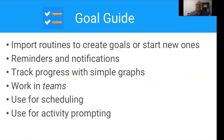So that's Routines — it's a way to just find out how to do things and to get guidance. You may have routines and activities that you do and want to track over time, and that's where Goal Guide comes in. You can import routines into Goal Guide to create goals that you want to do progress tracking on. You can also create routines directly in Goal Guide — it's got similar tools for doing that — and Goal Guide is where you can schedule things, track them, and add notifications.